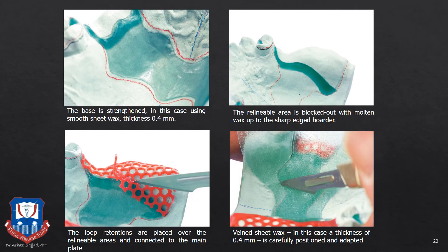First a thin layer of inlay wax or carving wax is spread over the major connector design. This is followed by placement of the mesh or lattice pattern on the area where relief was provided — the minor connector which will hold the acrylic and denture teeth. Then another layer of 20 or 22 gauge casting wax is adapted onto the major connector, which can be a textured or smooth pattern casting wax. Using inlay wax, all the minor connectors, rests, and indirect retainers are fabricated.